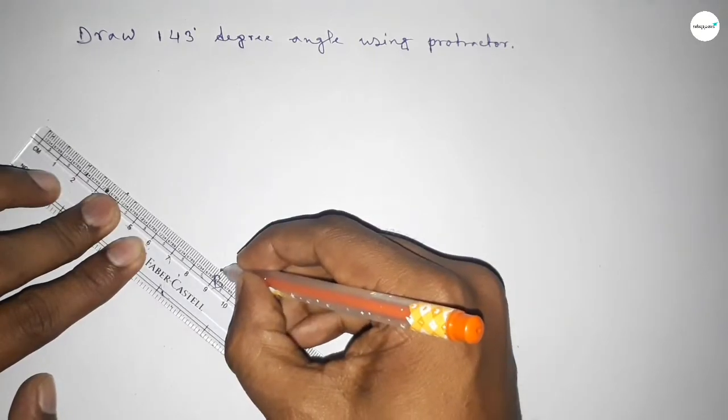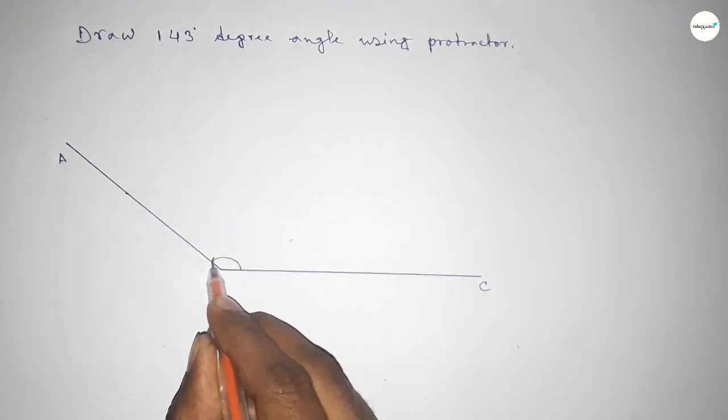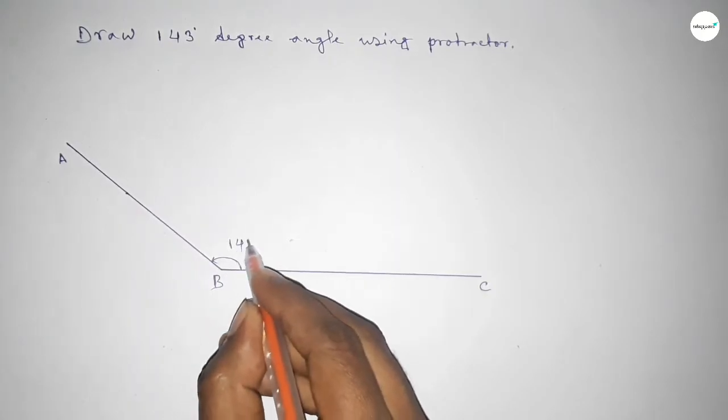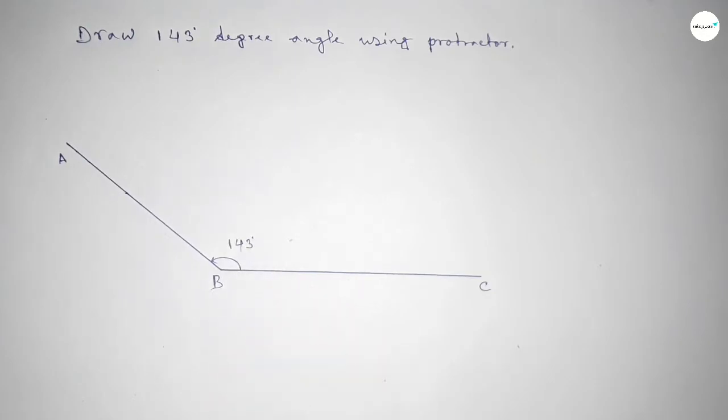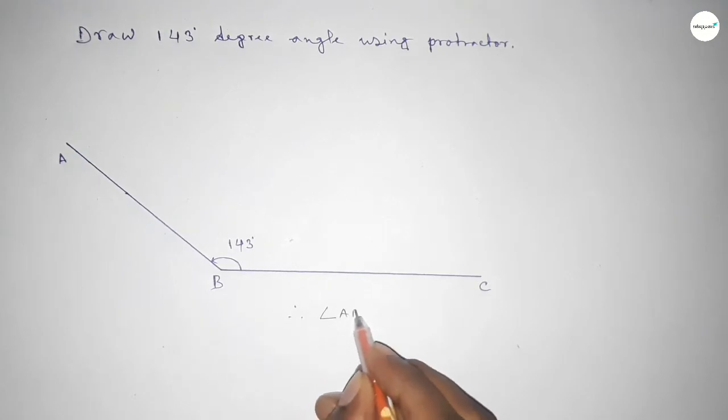Taking here point A. So angle ABC, this is 143 degrees. Therefore, angle ABC equals 143 degrees. That's all, thanks for watching.